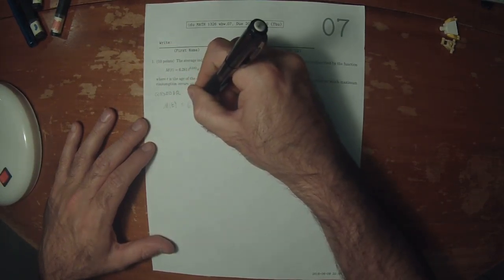Looking at this function and rewriting it briefly, we could write M of t is 6.281 multiplied by, in the numerator, t to 0.242, and in the denominator, exponential of 0.25 t. So I wrote it in the denominator because it has a negative exponent.